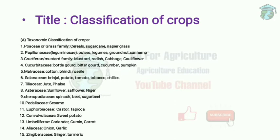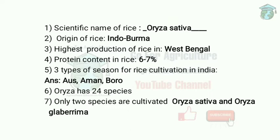The first question is the scientific name of rice, that is Oryza sativa. Next question: origin of rice is Indo-Burma — Burma means Myanmar — so Indo-Myanmar. Next question: highest productivity of rice by state according to 2020 is West Bengal.